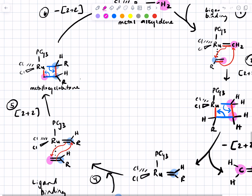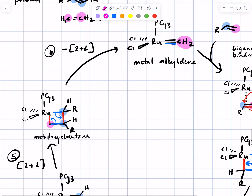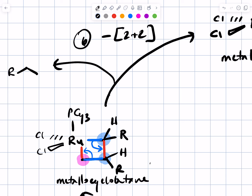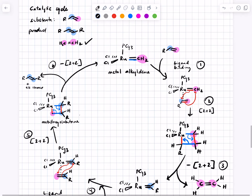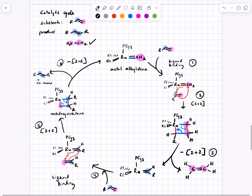That spits out our metathesis product plus the cis isomer, and the ratio of those depends on their relative stabilities. Then it regenerates the metal alkylidene. That's how the process goes — we continue to cycle through, and each turn of the cycle we spit out another molecule of ethylene in step 3, and then in the back half of the cycle we spit out our metathesis product.